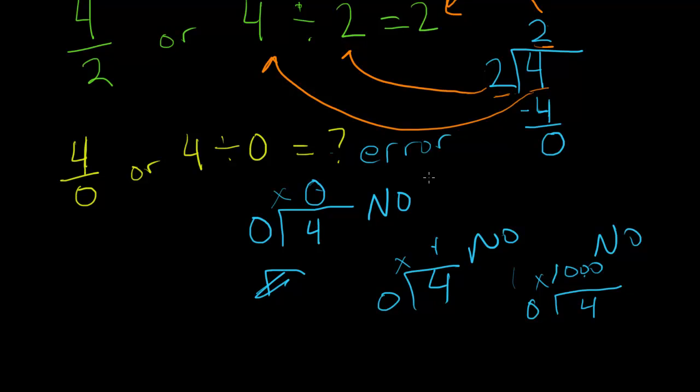But since the calculator doesn't know what to choose here, it just tells you error. It doesn't compute. So that's your basic explanation of why you can't divide by zero from a practical perspective, from a logical perspective.